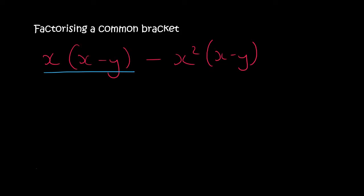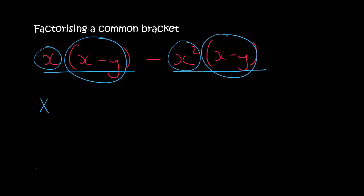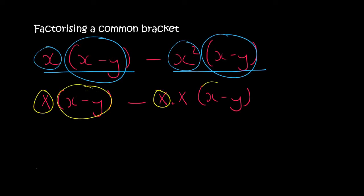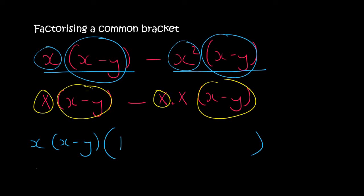This one you need to be careful about. What is common? This x is over there, and then this one has two x's, so the common thing is an x, and the bracket is also common. So what we're going to take out is x and x minus y. In the first term we've got nothing left, so we say 1, and then in the second term we still have an x. Let me show you that again — writing it out: x · (x minus y). This part has x · x, then x minus y. The x goes with that, and this whole part goes with that whole part. So we're taking out x(x minus y). In the first bracket we've got nothing so we just say 1; in the second bracket we still have this x, so we say 1 minus x, and there's your answer.